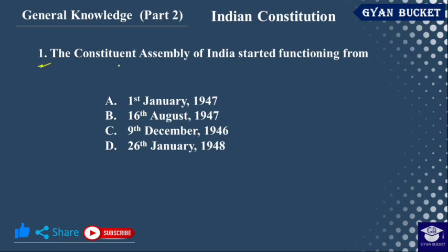This is the first question: The Constituent Assembly of India started functioning from when? It started on December 9th of 1946. The first meeting of the Constituent Assembly was on December 9th of 1946.